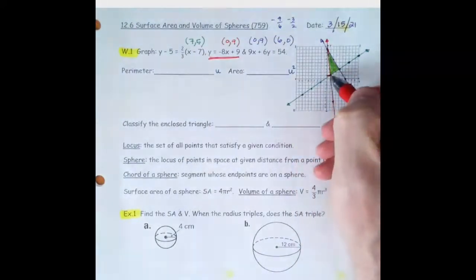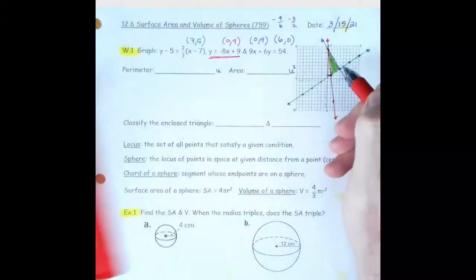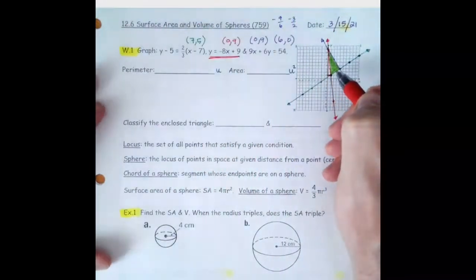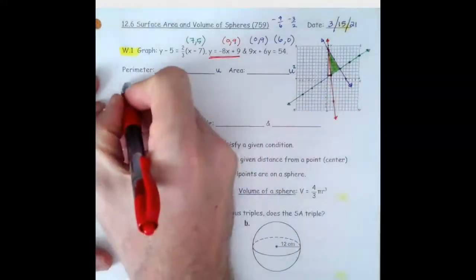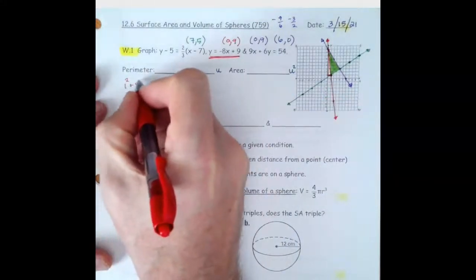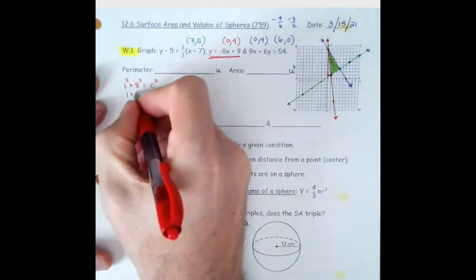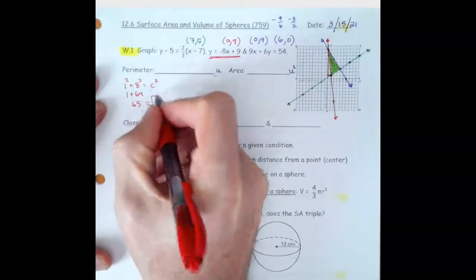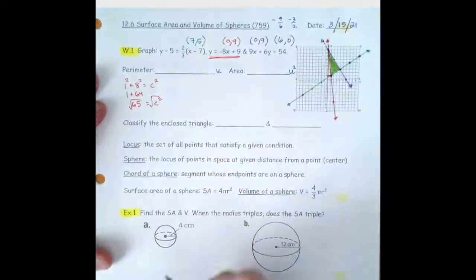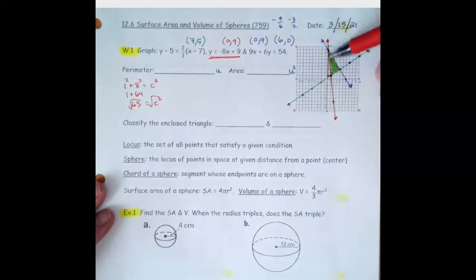If we go straight to the left and straight up, we get this very narrow triangle, which has a side of 1 and a side of 8. So 1 squared plus 8 squared equals c squared — that's 1 plus 64. If we square root both sides, that's going to be root 65. So that red side is root 65.